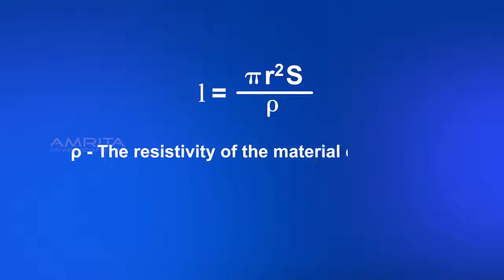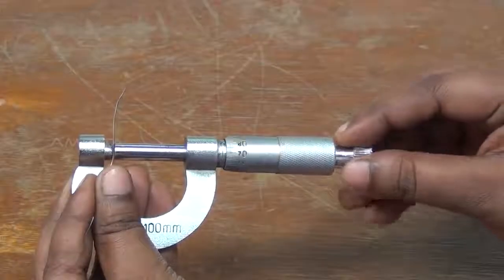where rho is the resistivity of material of the wire, R is the radius of the wire, which can be measured using a screw gauge.